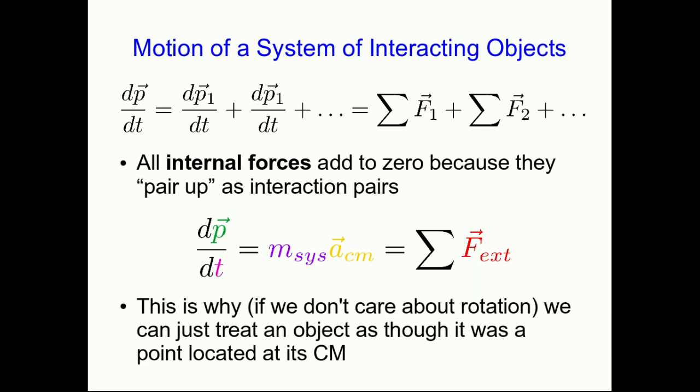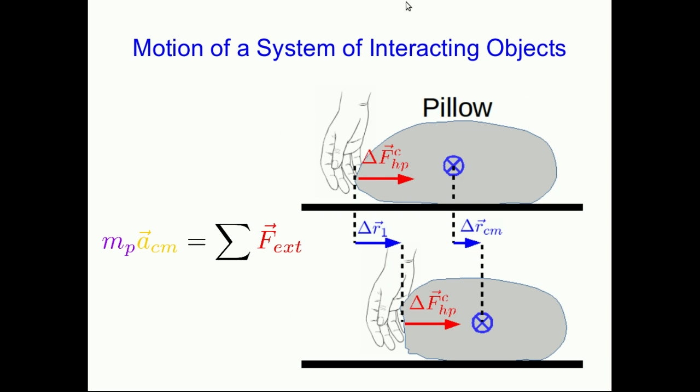Even if the object has parts on it that flop around or other complications like that. For example, if you were going to push a pillow, you can think of the pillow as consisting of a large number of interacting objects. We call them atoms. And although if you want to keep track of where the back edge of the squishy deformable pillow is, that might be rather complicated. Keeping track of where the center of mass is is rather easy because it simply responds to the sum of all the external forces.